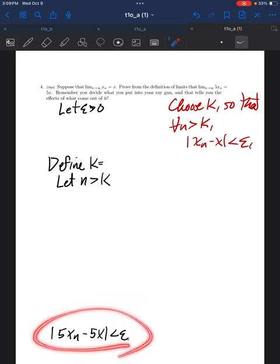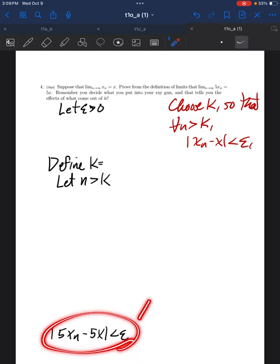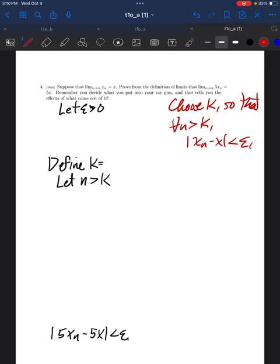So if I make k equal to that k1, then I can make this be true. I want to make this be true. So I just have to work from here backwards to here. And that's pretty clear how you would do that, right? If 5xn minus 5x in absolute value is less than epsilon, I can pull out the 5, which is positive.